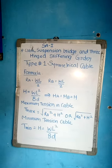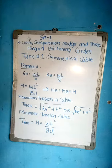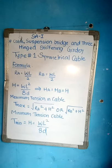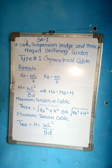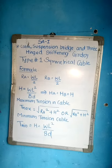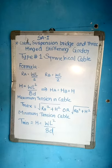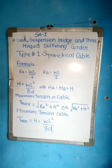...equal to square root of R square plus H square, or square root of RB square plus H square. Now, minimum tension in cable: T minimum is equal to H, is equal to WL square by 8d.